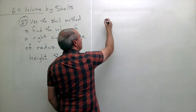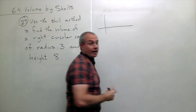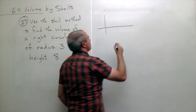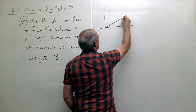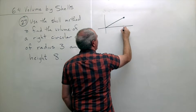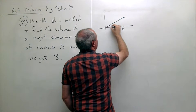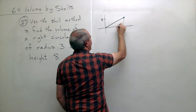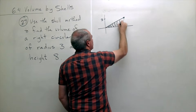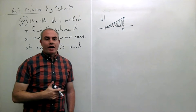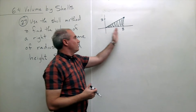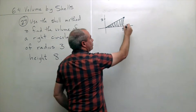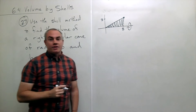This is the way I'm going to do it — this is not the only way, there are many ways to set this problem up. What I'm going to do is go out eight units and up three, and look at this triangle. There's a right triangle whose height is eight, its base is three, and what I'll do is revolve that around the x-axis.